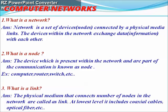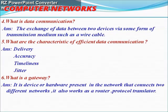Next question: what is a link? The physical medium that connects a number of nodes in the network is called a link. At the lowest level, it includes coaxial cables, optical fibers, etc. Next question: what is data communication? Data communication is the exchange of data between two devices via some form of transmission medium such as wire cables.